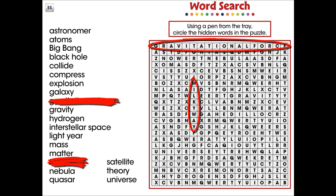Use your interactive pen tool to find and circle the hidden words in the puzzle. Cross off the words in the list once they are found. Visit CCPInteractive.com for extended versions of our products and to watch more demo videos.